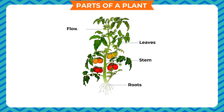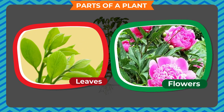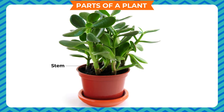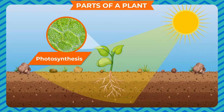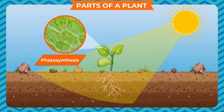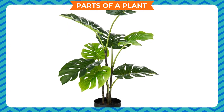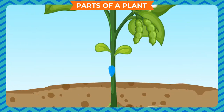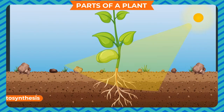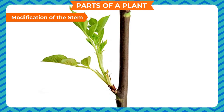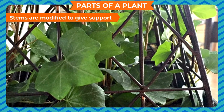The stem is the link between the roots, leaves, and flowers. It bears the leaves, flowers, and fruits, and helps the plant stand upright. Leaves get possible sunlight for photosynthesis due to the manner in which the stem and its branches hold them. The transportation of water, minerals, and food to all parts of the plant is carried out by the stem. Food prepared by photosynthesis is also stored in the stem of some plants.